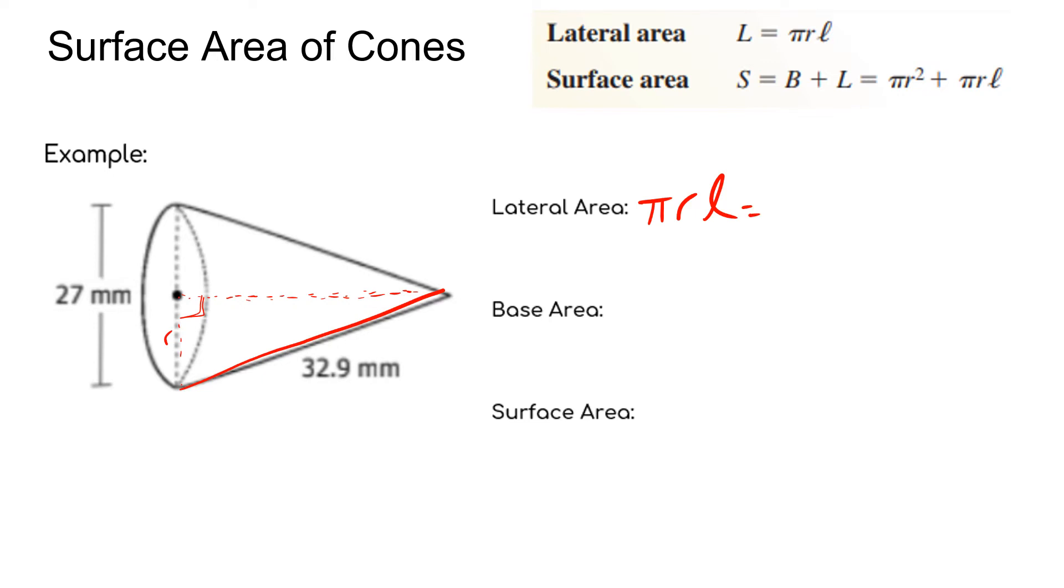In this case we've got everything that we need, so we just plug this into our calculator. We got π times our radius, which is half of the diameter. If you'll notice on that circle, we're given 27, which is the width or the diameter of that circle, so we need to split that in half. So the radius then would be half of the 27, which would be 13.5, and now we're going to plug that into our calculations. So we're just going to do π times 13.5 times our slant height of 32.9.